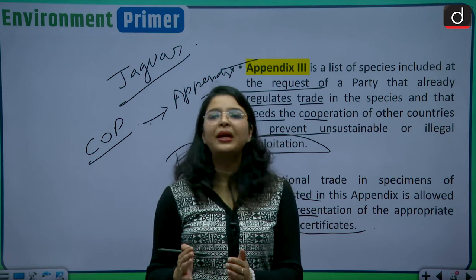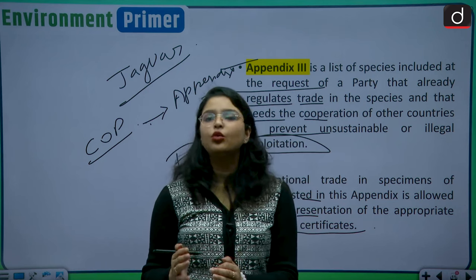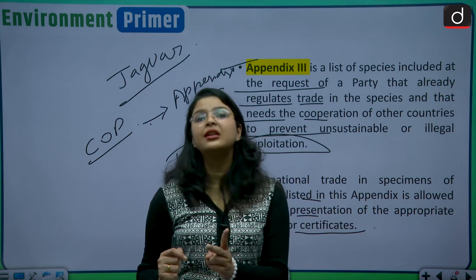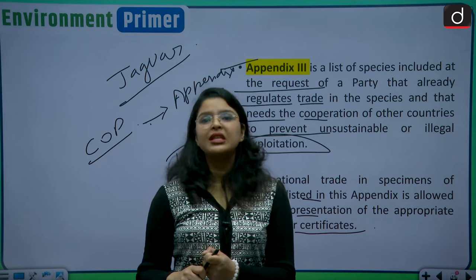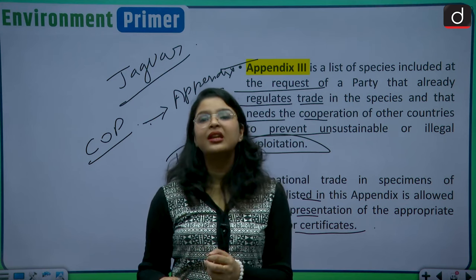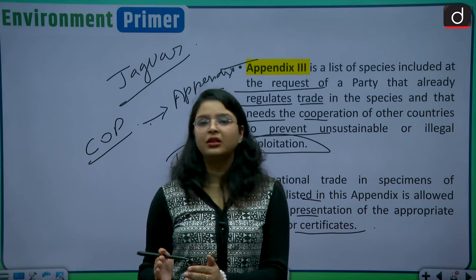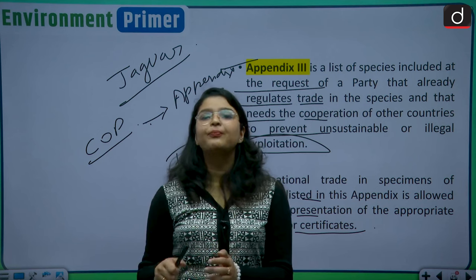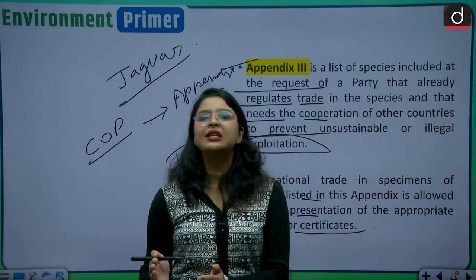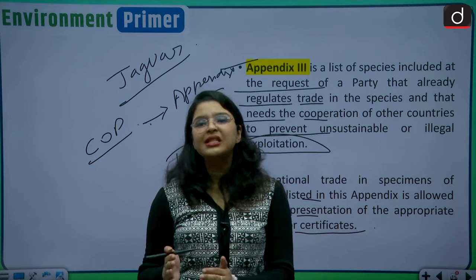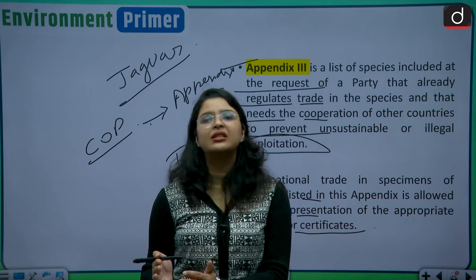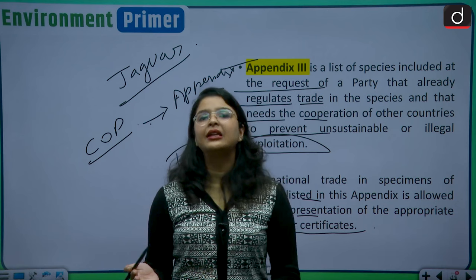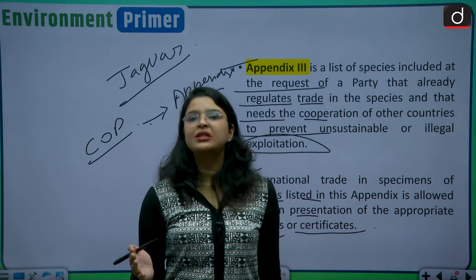Examples of Appendix 1 species include gorillas, sea turtles, and recently India has added two kinds of turtles — the Red-crowned Roofed Turtle and the Leith's Softshell Turtle. Examples of Appendix 2 species include penguins and corals; in fact, most of the species in the CITES Convention are placed in Appendix 2. Jaguar is an example of an Appendix 3 species.